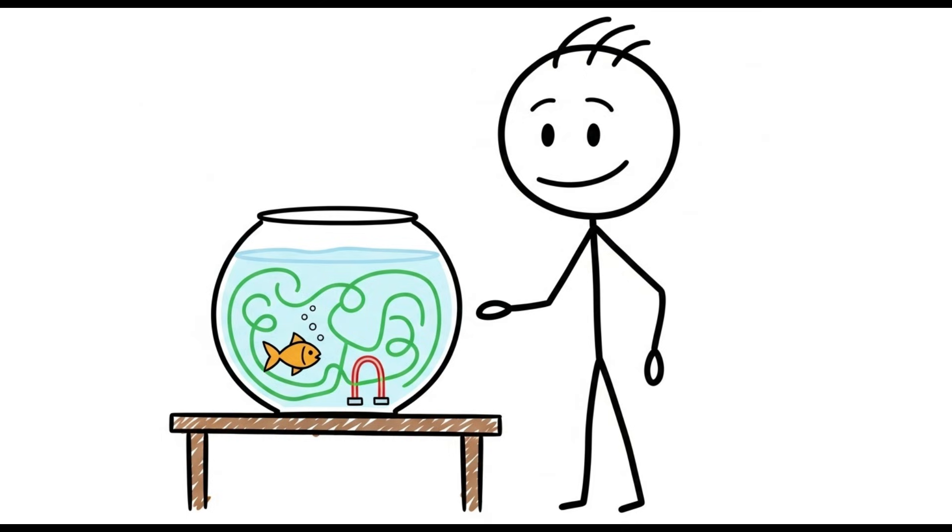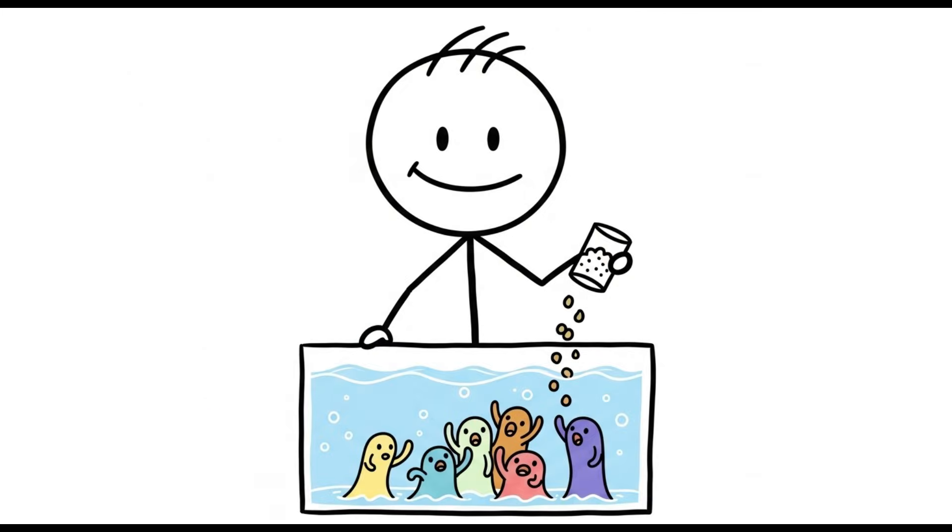They can recognize their owners, learn to navigate mazes, and even remember which little plastic hoop to swim through for a reward. They're basically tiny wet puppies who can recognize the giant food god who appears above their tank every morning.